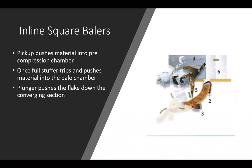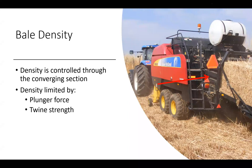For large inline square balers, material is picked up, pushed into a pre-chamber, and once full the stuffer trips and pushes material into the barrel chamber; the plunger forces it down into compression sections. Density control is limited not really by the plunger force but by twine strength. In biomass studies trying to achieve over 12 pounds per cubic foot, the twine would snap once the bale exited the baler — once the first string went, they all went. Generally you'll be around 8 to 10 pounds per cubic foot.